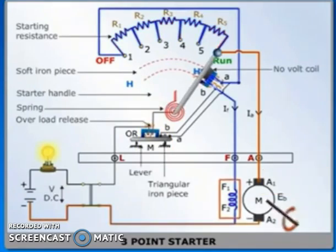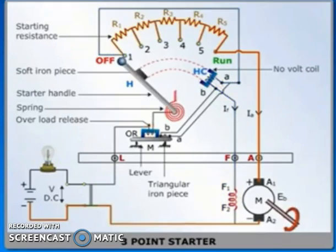Limitations of the three-point starter: If speeds above normal are to be obtained, the field current must be reduced. At a certain value of reduced field current, the electromagnetic pull of the holding coil may become less than the spring force. We know flux is inversely proportional to speed. As flux decreases, speed increases. At the point where flux is small enough, since IF is in series with HC magnet, its force becomes less than the spring force. In such a case, the starter handle returns to the OFF position and the motor stops.